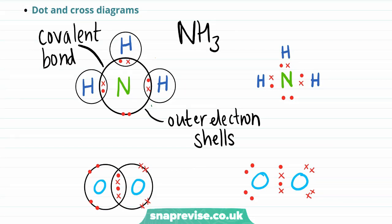And each overlap contains a pair of electrons, one originating from the nitrogen, shown as a dot, and one originating from the hydrogen, shown as a cross. Clearly showing that the covalent bond is formed by the sharing of electrons.